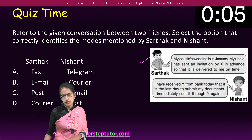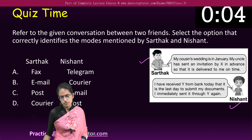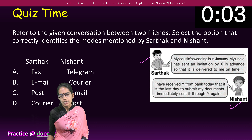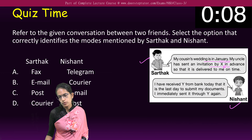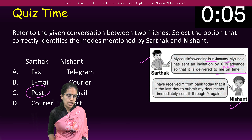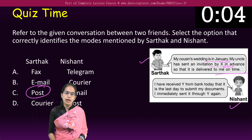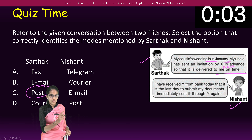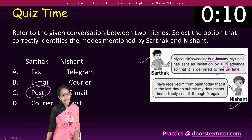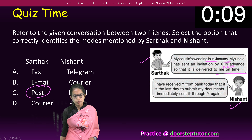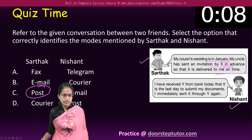There are two children who have a certain conversation. Sartak says his cousin's wedding is in January. His uncle has sent an invitation by post in advance so that it reaches him on time. Since there is enough time, the uncle sent it by post in advance. So post would be the right option here.